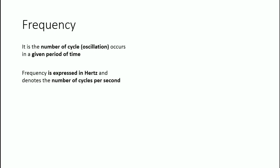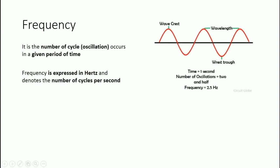Frequency is expressed in terms of hertz, which means it is the number of cycles that occur within one second. For example, looking at this waveform — assuming it starts at zero and ends at the end of one second, so the time frame is one second — to find the number of cycles, by just looking at the waveform, we count: from zero it rises to the crest or maximum point of the waveform, comes down to the negative side to the lowest point which is the trough, and returns to zero. That is our one cycle.